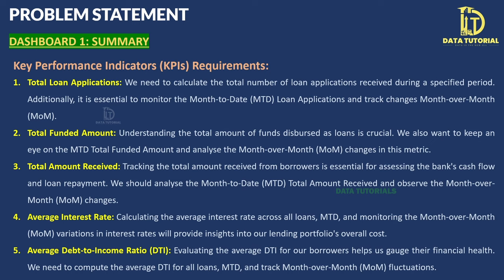The first problem statement covers the Summary dashboard, which focuses on Key Performance Indicators. The first KPI required by the client is Total Loan Applications — the total number of applications received during the period — along with Month-to-Date (MTD) applications and Month-over-Month (MoM) growth or decline.